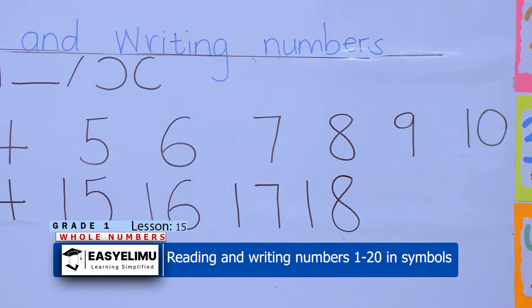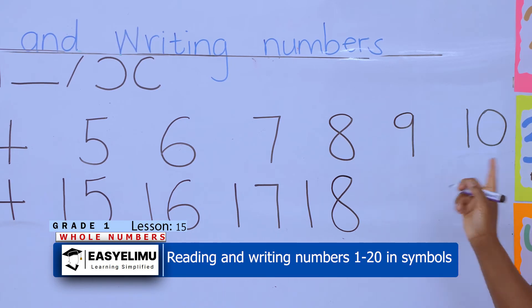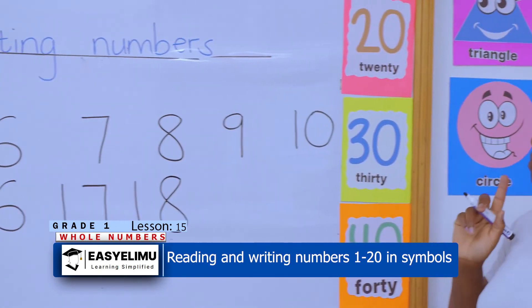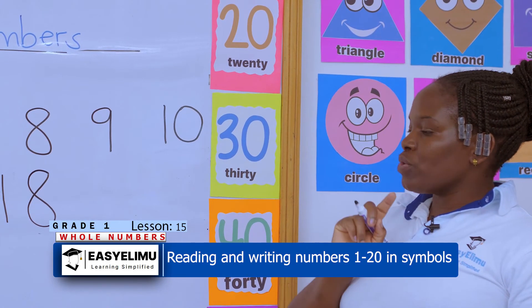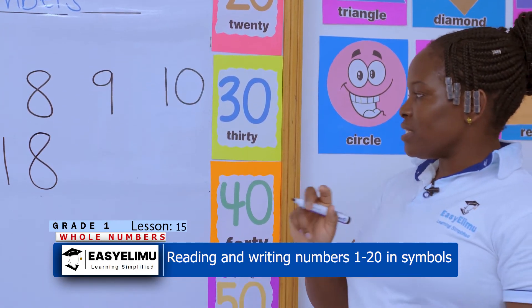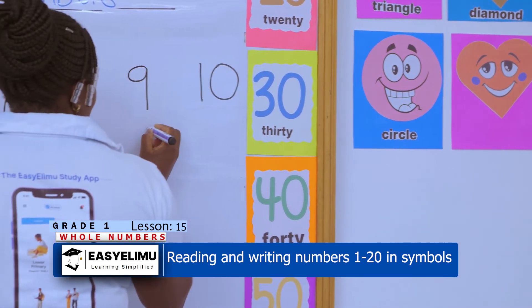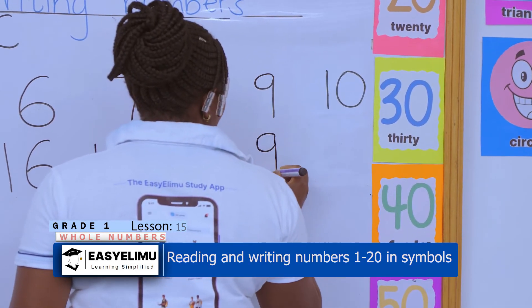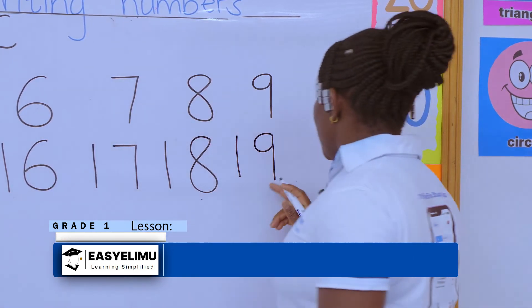I have one ten and nine ones — which number is that? That is number nineteen. How am I going to write nineteen? The nine appears under ones and the one appears on the left side in the tens place.